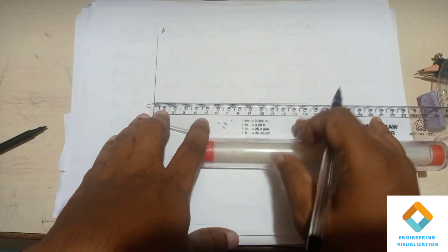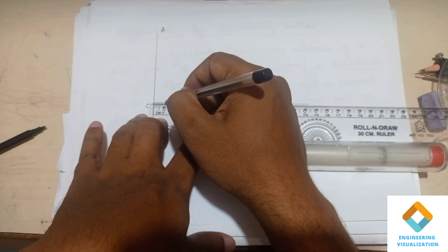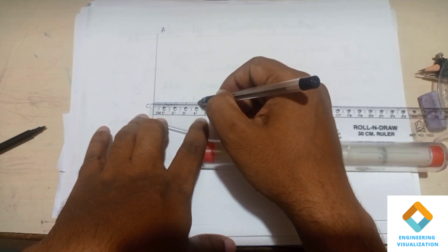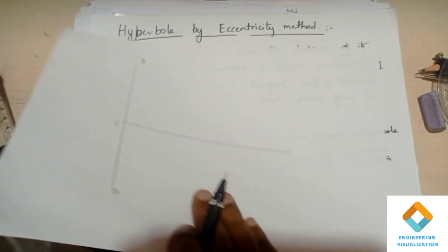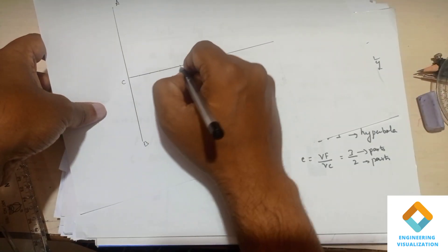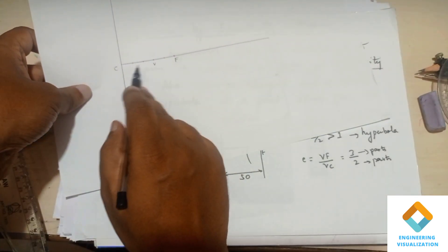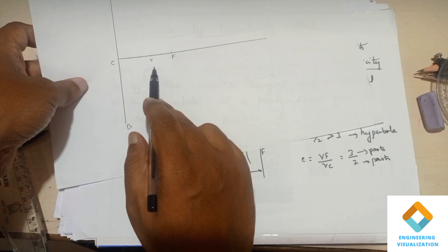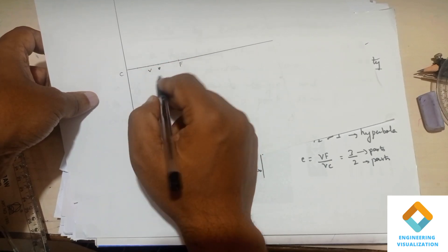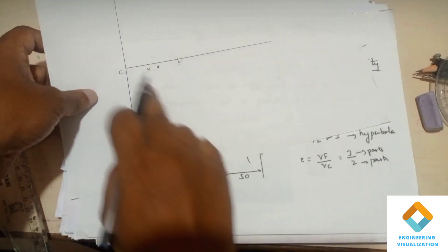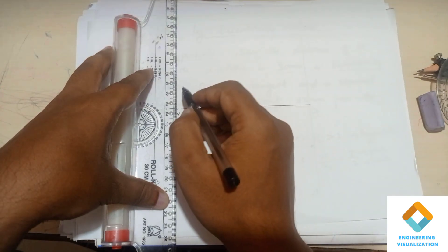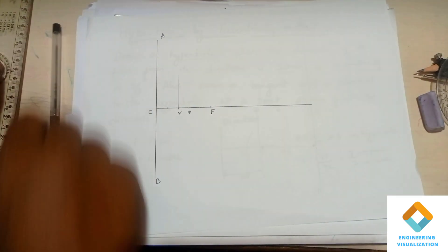I'll divide this line into five parts so each box will be 10 mm — 50 mm means five centimeters. Now we are marking a point: VF divided by VC gives three parts by two parts. So this is the focus point and this is your V point, where we exactly draw the hyperbola. VF should be three parts and VC should be two parts. Now at the point V we will draw one vertical line.